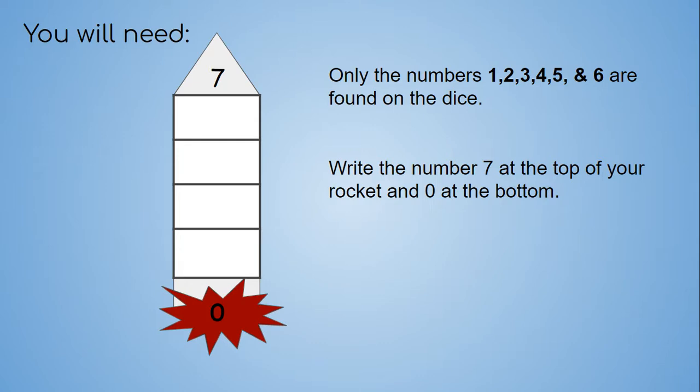This is what your rocket will look like. Remember, only the numbers 1, 2, 3, 4, 5, and 6 are found on the dice. So we're going to write the number 7 at the very top and the number 0 at the bottom. All the other numbers on the dice will fit between 0 and 7.